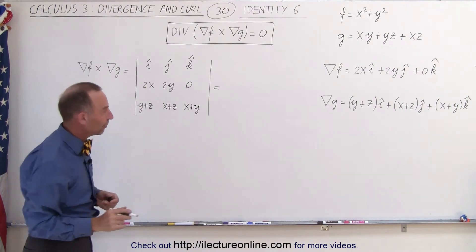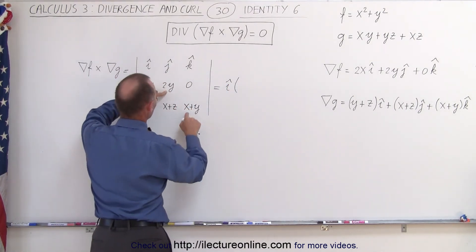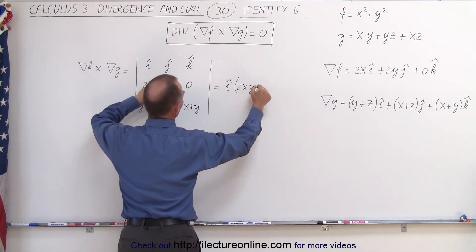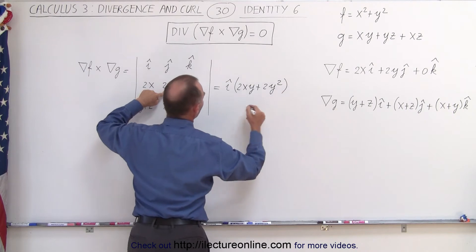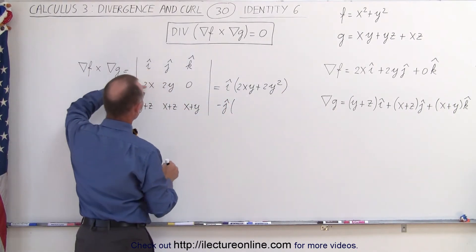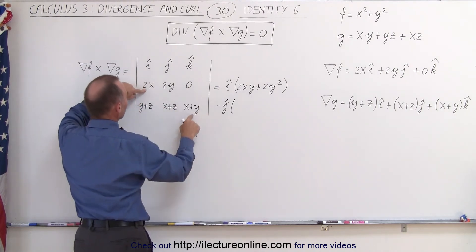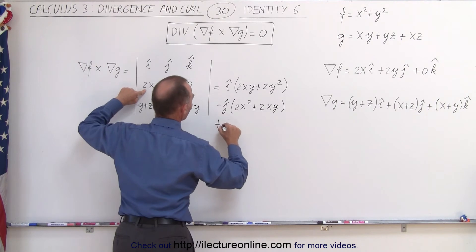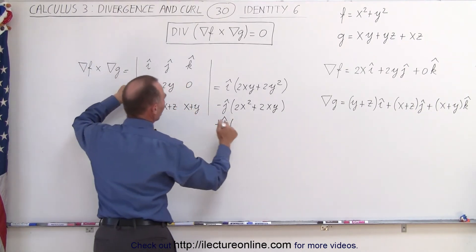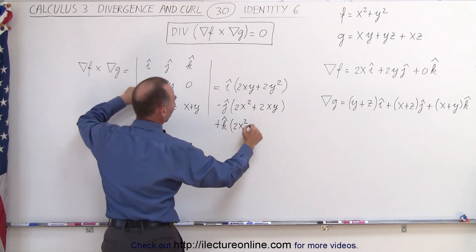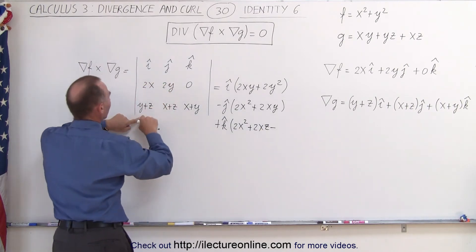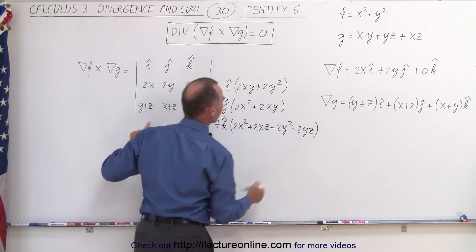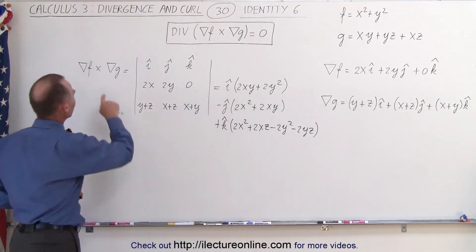When we take the cross product we get the following. The i component is this times this minus this times this — with the zero, that makes it easy — giving us 2xy plus 2y squared. Then minus j: this times this minus this times this; again with the zero the second term drops out, giving us 2x squared plus 2xy. Then plus the k component: 2x squared plus 2xz, minus 2y squared, minus 2yz.